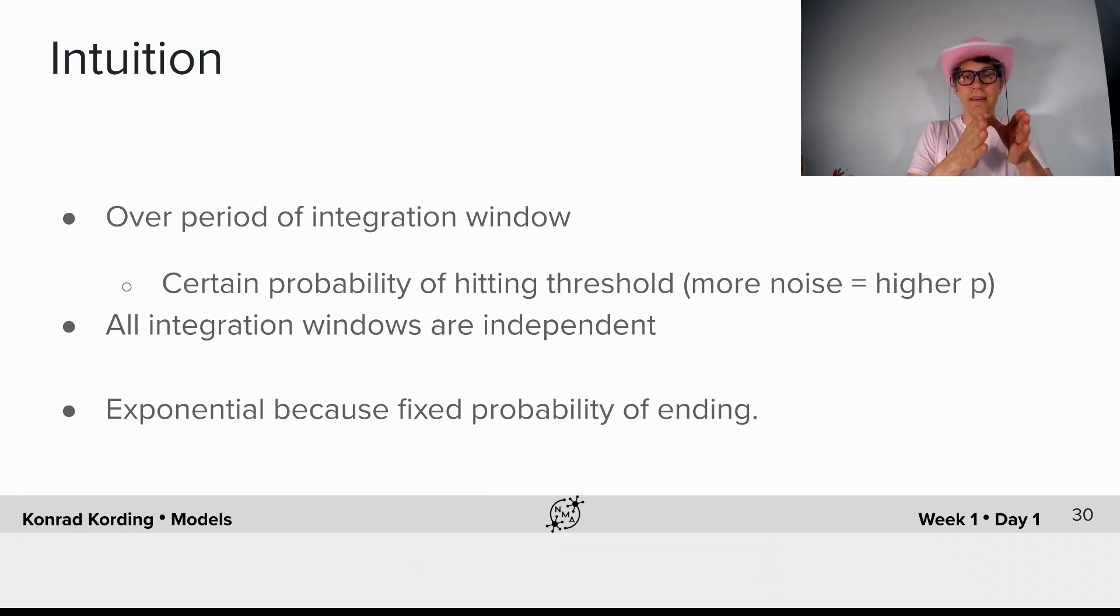And all the individual intervals are effectively independent of one another because they forget what the input was that happened in the past. And because they're all independent, ultimately it looks exponential because within each period of time we have a fixed hazard rate of ultimately spiking.